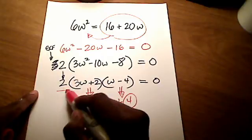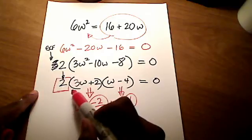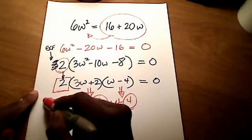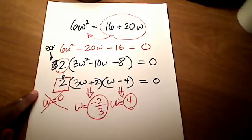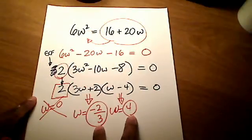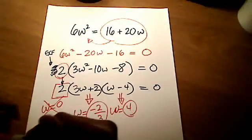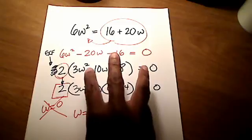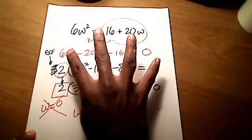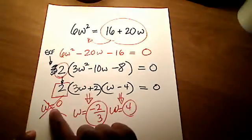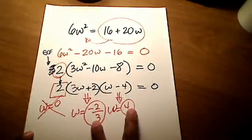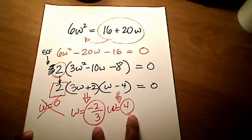Since this GCF didn't have a variable in it, it did not have a w in it at all, we only took out a 2, then w equals 0 is not another answer. This quadratic equation only has 2 answers at most because it's quadratic. You will learn later on that if you have a cubic equation with largest exponent as a 3, it could have 3 answers. A quartic equation with largest exponent as a 4 might have 1, 2, 3, 4 possible answers. But when you're dealing with a quadratic equation, at most 2 possible answers, not 3.